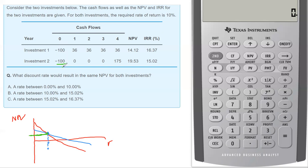So minus 100 minus 100, well that's just zero. 36 minus zero, that's 36. 36 minus zero, that's 36. 36 minus zero, that's 36. And 36 minus 175, that's minus 139.